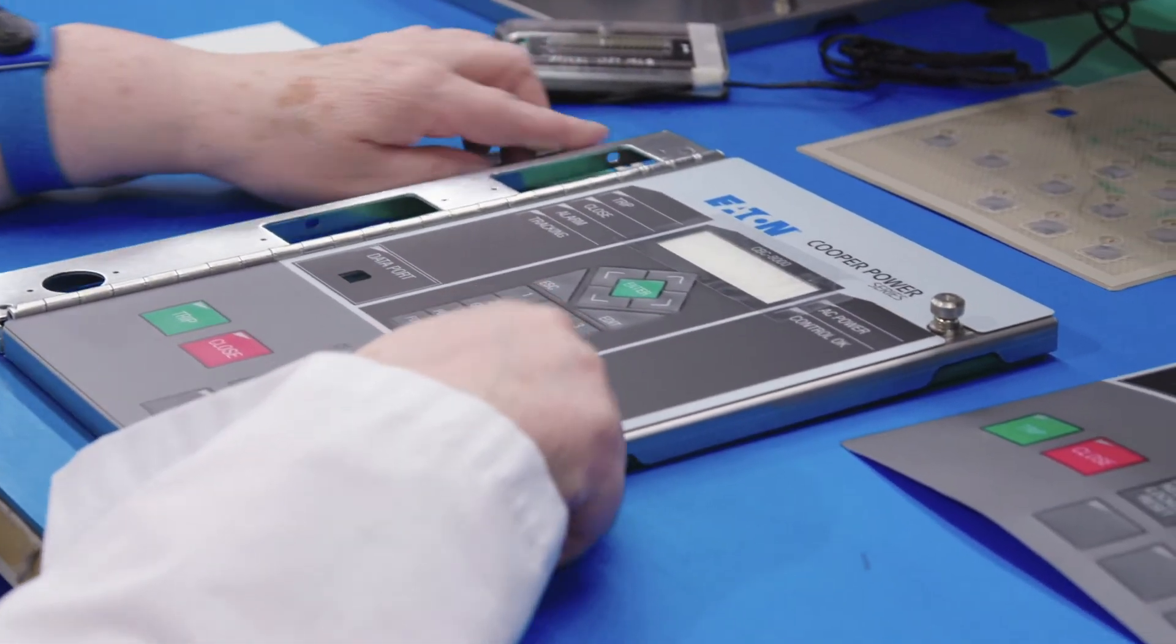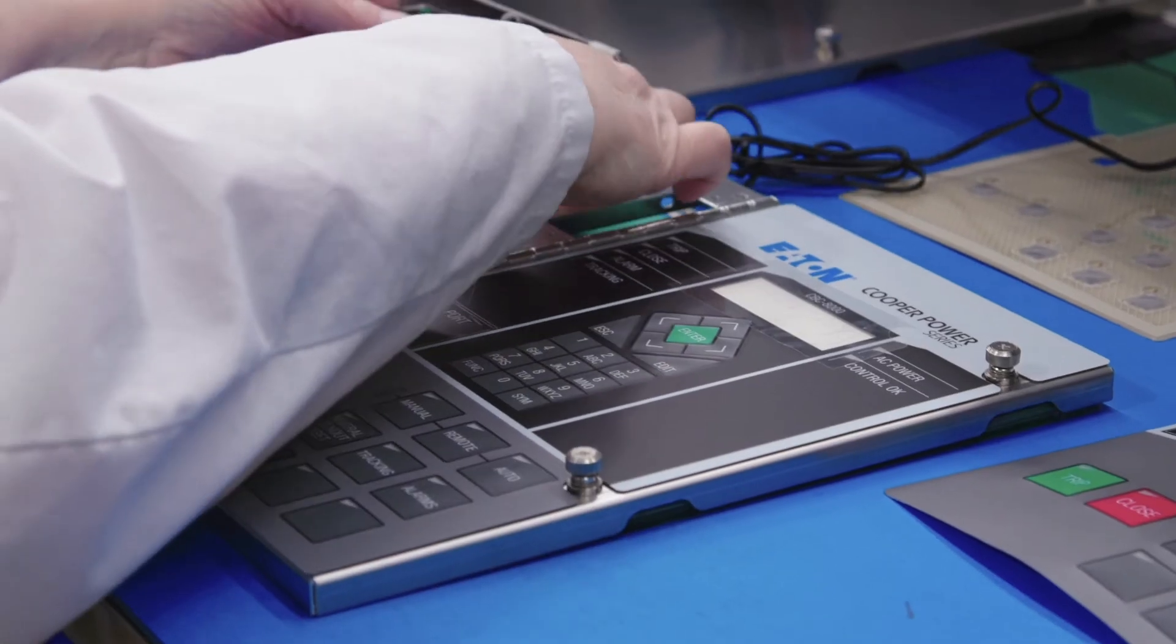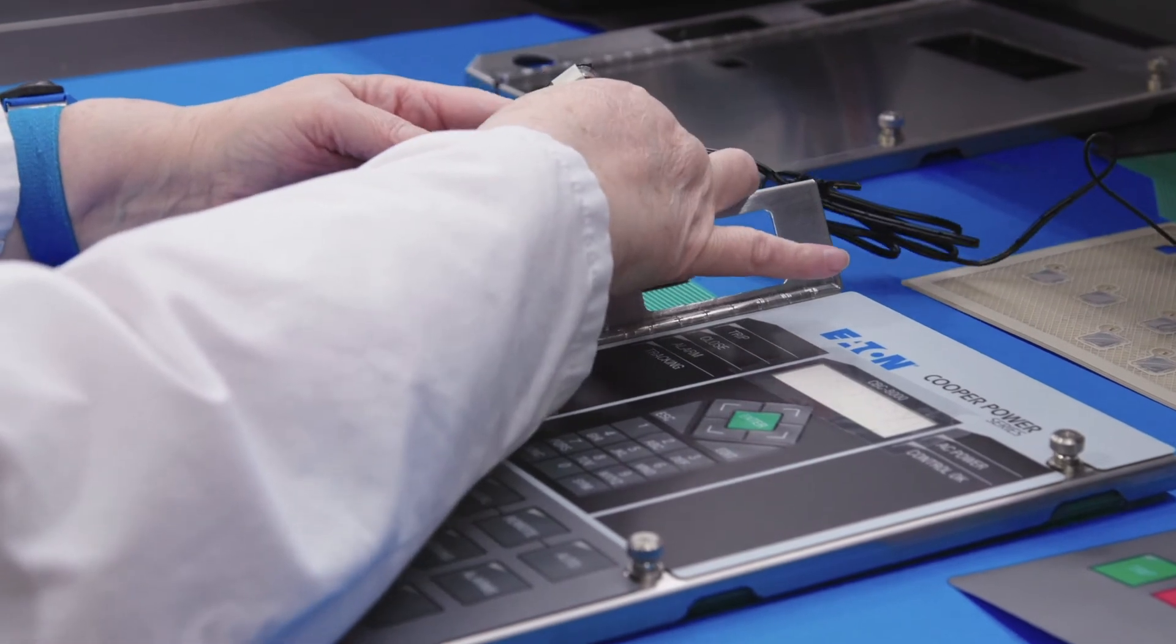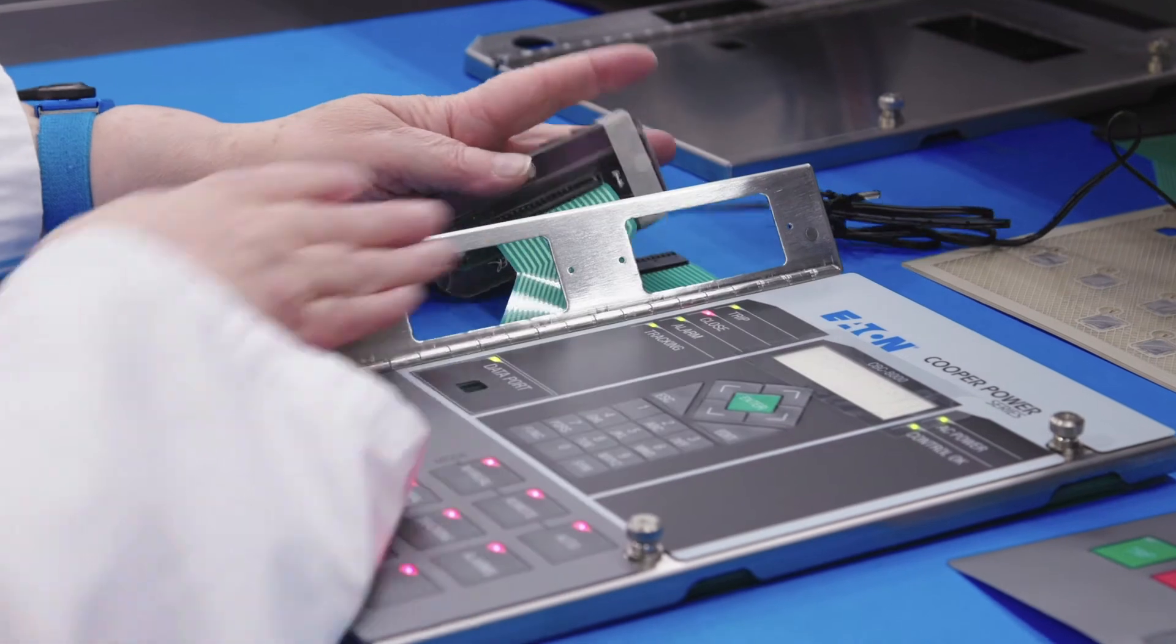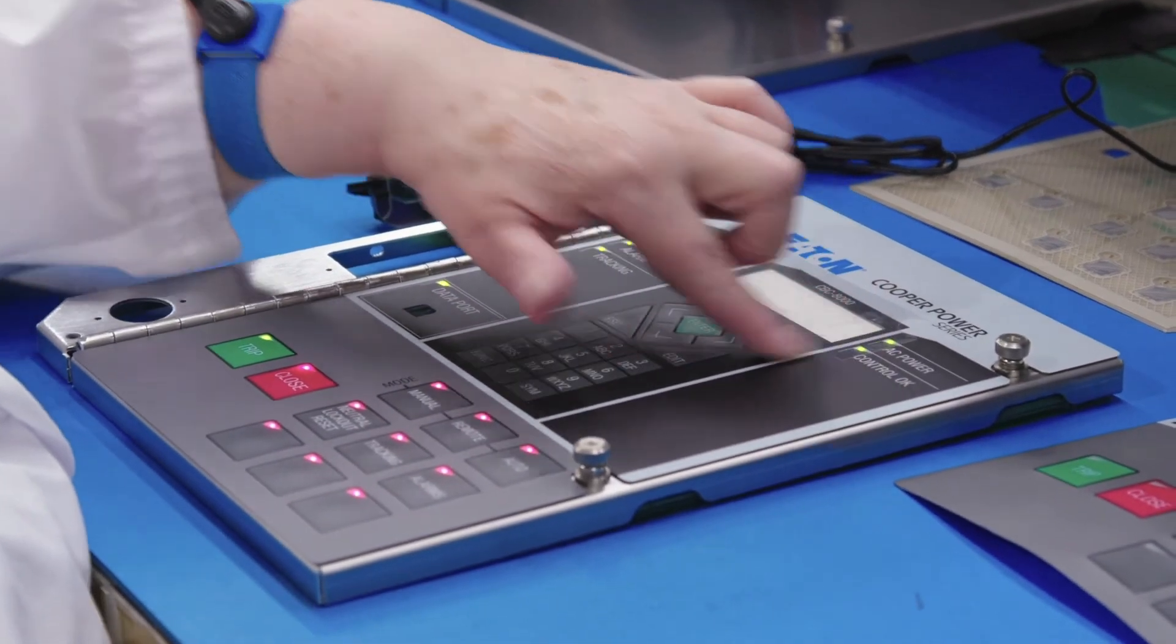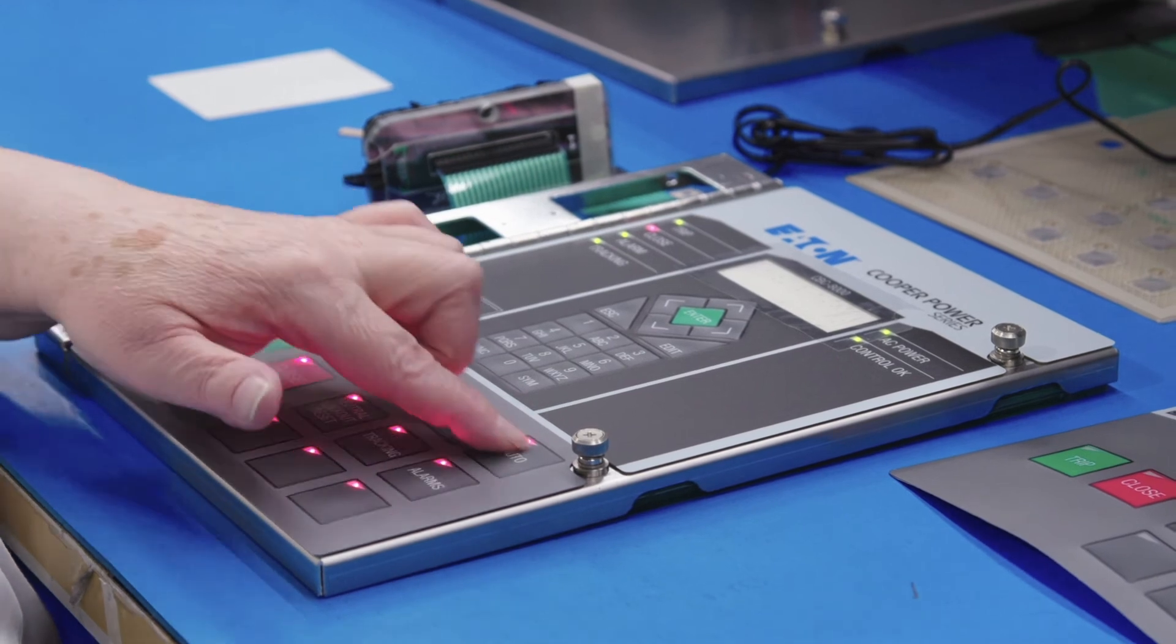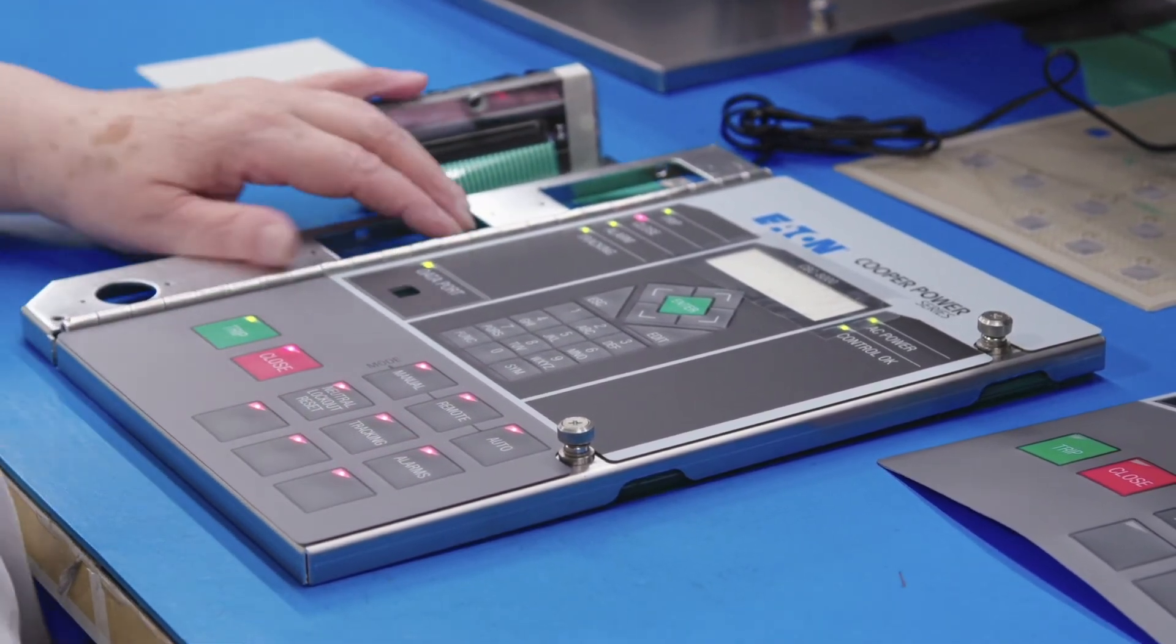After final assembly of the graphic overlay, we want to test those LEDs one more time to make sure that we didn't have any static discharge, any faulty LEDs as a result of the assembly process itself. And you'll see one more time the assembler's going through each of the LEDs and applying slight pressure to ensure that we don't have any intermittent contacts of the LEDs or their corresponding resistors.